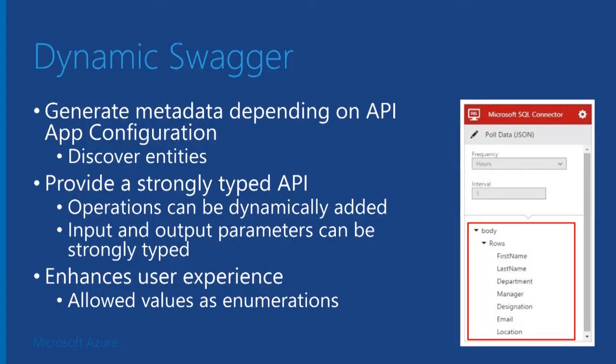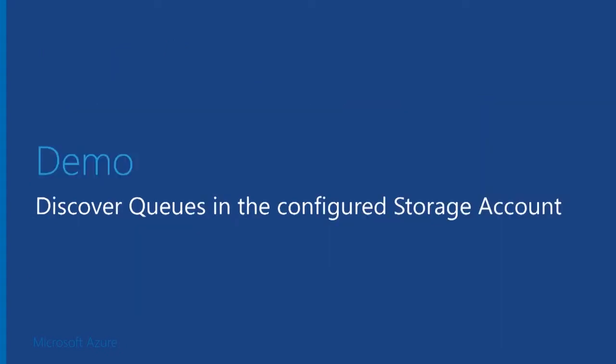This is very useful and we use it in SQL, Salesforce, SharePoint, and a bunch of other connectors. It enhances the user experience — you can have strongly typed input/output so the end user doesn't have to remember what the fields are. What we will do in our storage connector is, rather than just asking for the name of the queue as a text string, it would be nice if the connector can actually go to the storage account, find out what queues it has, and provide it as a dropdown so you can just select the queue you want.